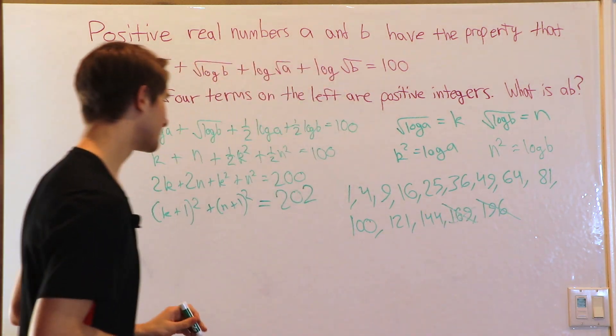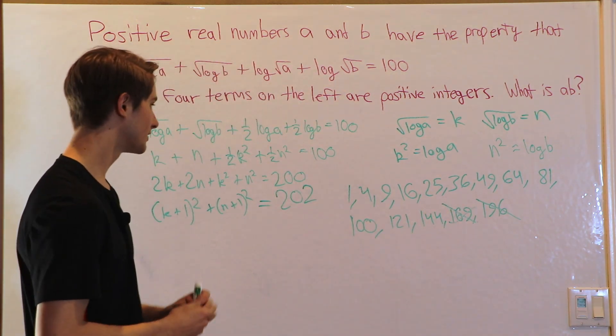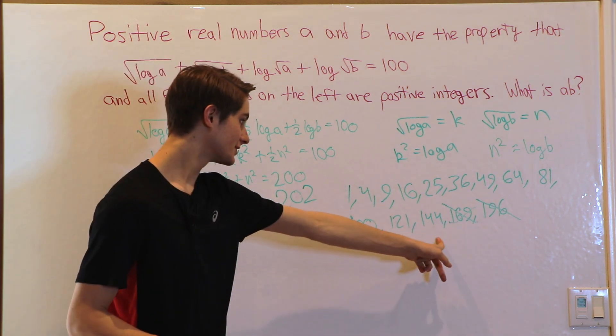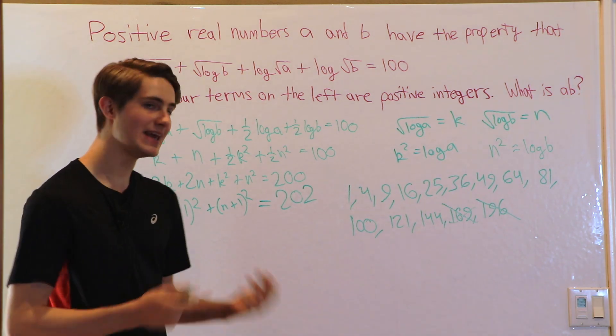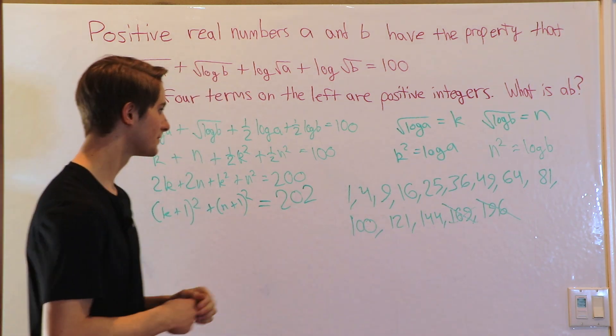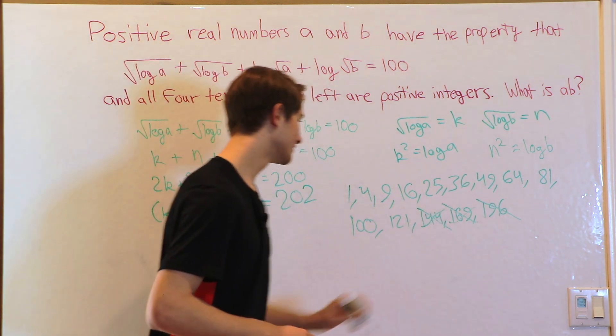Let's keep going. What about 202 minus 144? I don't know what that is, but I know that if we take something that ends with 2, subtract something that ends with 4, we're going to end up with something that ends in 8. Because 8 plus 4 is going to give us this 2 on the end. Do any of the perfect squares end in 8? Nope. That's not our answer either.